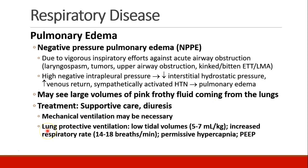If we do re-intubate these patients, we should use a lung protective strategy for ventilation, which means low tidal volumes of 5 to 7 mils per kilogram, an increased respiratory rate in order to maintain adequate minute ventilation, permissive hypercapnia — so we allow them to become a little hypercapnic — and PEEP is very important to avoid atelectasis, especially at these low tidal volumes.